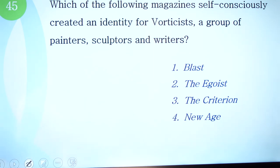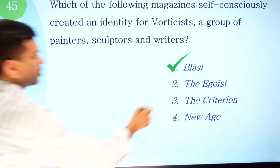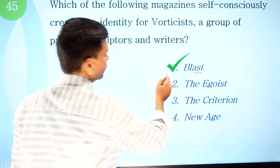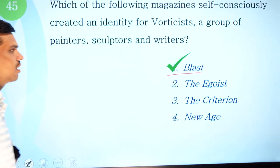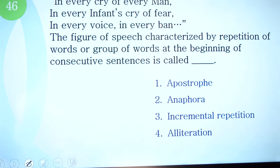Question 45: which of the following magazines self-consciously created an identity for the Vorticists — a group of painters, sculptors, and writers? Options are: Blast, The Egoist, The Criterion, and New Age. The correct option is Blast — the magazine associated with Vorticism.